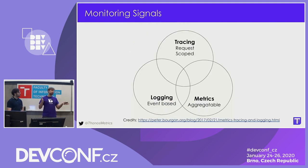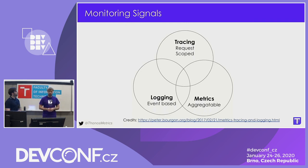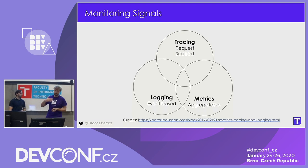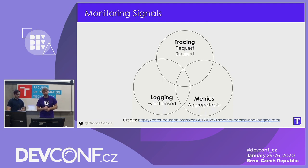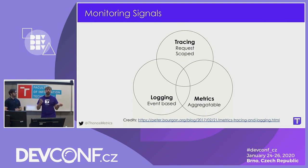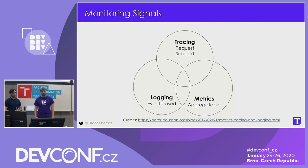As you probably know, there are different signals. We divide monitoring into: tracing, which is any bit of data or metadata that is bound to the lifecycle of a transactional request in the system; logging, which is essentially a discrete event; and finally, metrics — samples over a span of time composed into logical counters, gauges, histograms, things that you can aggregate.